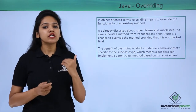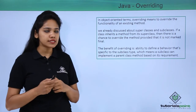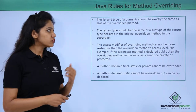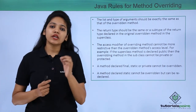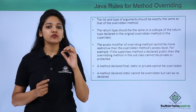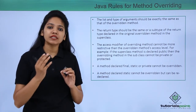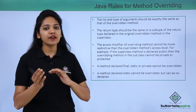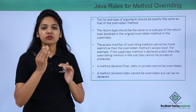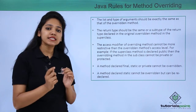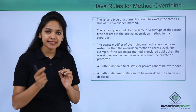We need to understand certain rules to program using the method overriding concept. First, the list and type of arguments that you have defined must be the same — it cannot differ. In method overloading you could define different types of parameters or different argument sequences, whereas in method overriding the list and type of arguments should be the same.